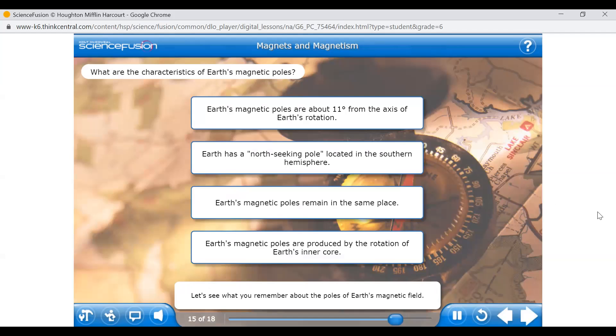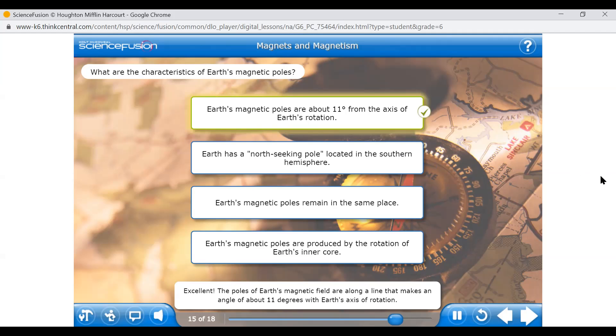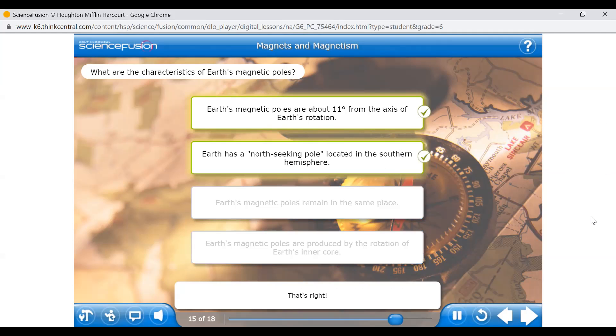Let's see what you remember about the poles of Earth's magnetic field. Select the statements that correctly describe Earth's magnetic poles. Excellent! The poles of Earth's magnetic field are along a line that makes an angle of about 11 degrees with Earth's axis of rotation. That's right! The magnetic pole that's near Earth's southern geographic pole attracts the south-seeking end of a compass needle, so it's a north-seeking pole. You realize that the Earth's magnetic poles are about 11 degrees from the geographic pole and move over time. Both of these characteristics are due to the motion of the liquid outer core. The magnetic pole in the northern hemisphere is a south-seeking pole, and the magnetic pole in the southern hemisphere is a north-seeking pole.